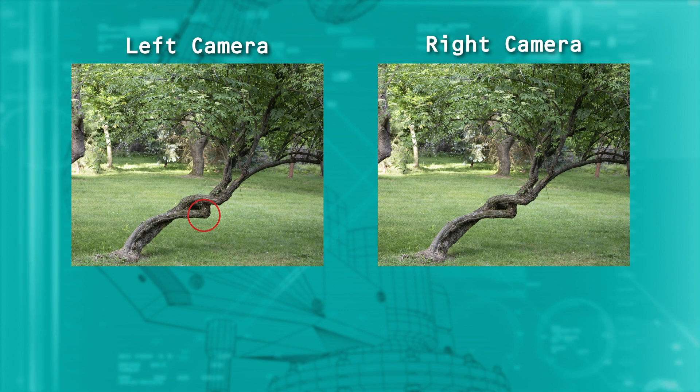For our example of trying to avoid hitting the tree, we need to find the tree in both images. To do this, we look in both images for some common features of a tree.